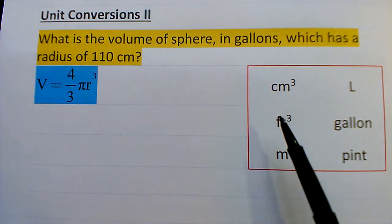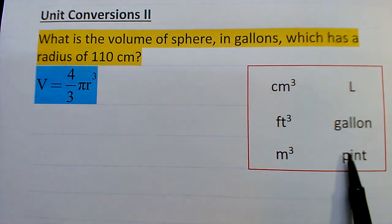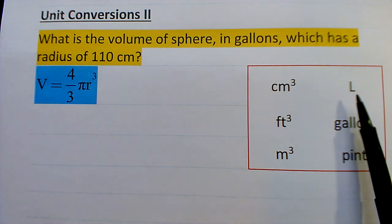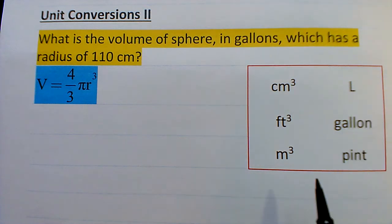First of all, there are two distinct types of volume units. There are what I call stand-alone units, like liter, gallon, pint, cup, bathtub, and so on.